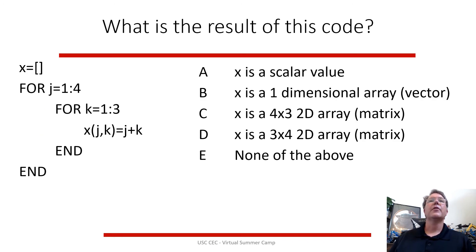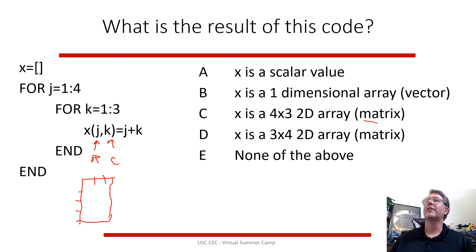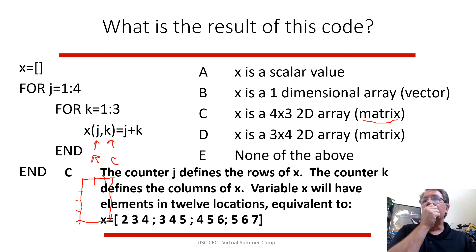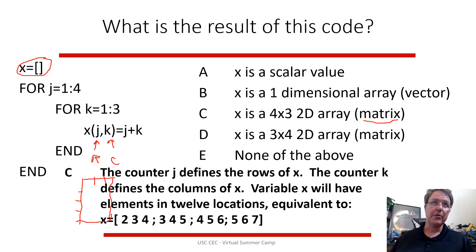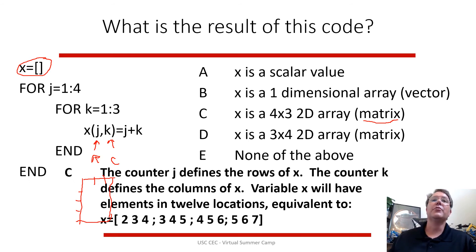In a double for loop example, j represents the row and k represents the column. With four rows and three columns, it goes through the first row with three column values, then changes j from 1 to 2 to 3 to 4. The x variable starts as an empty matrix and the loop executes 12 times total, placing the j and k values into the matrix at each location, resulting in a 4×3 matrix.